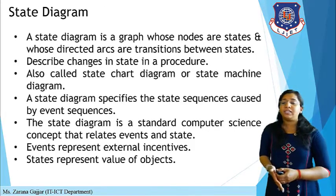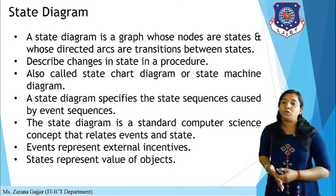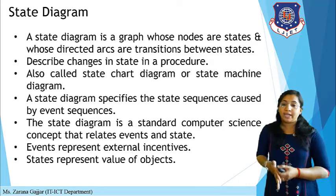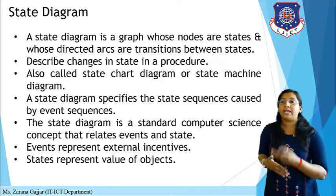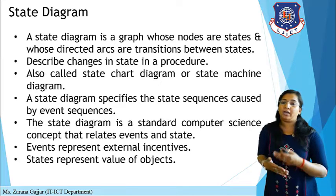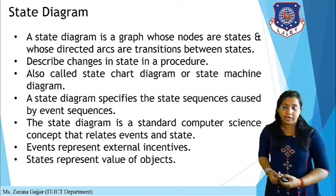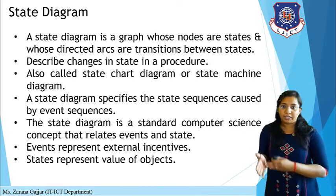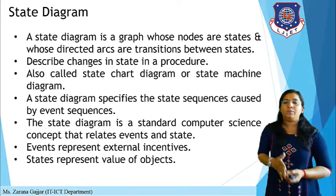A state transition diagram is basically a collection of events and states. A state diagram is a graph whose nodes are states and whose directed arcs are transitions between those particular states. It describes changes in state in a procedure.